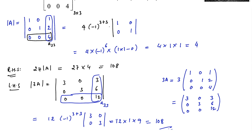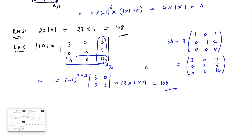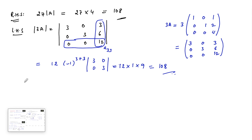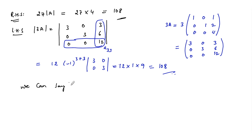We can see that the LHS value is 108 and the RHS value is 108. Therefore, det(3A) = 27 × det(A), which is what we needed to show.